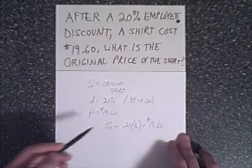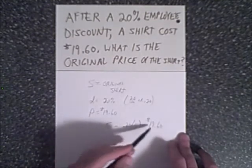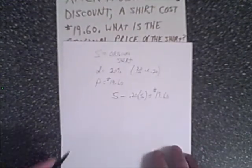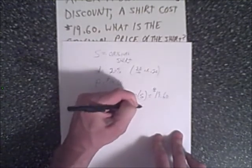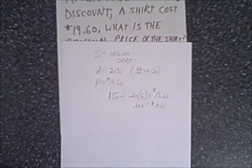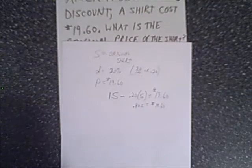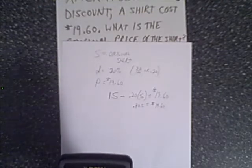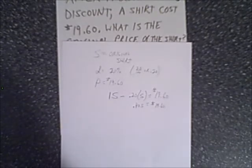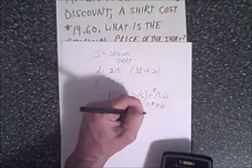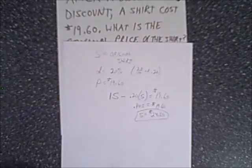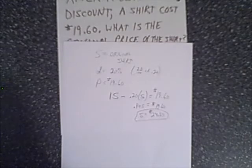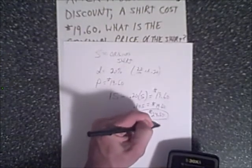So we have our equation. This is the same as 1S, so 1S minus 0.20S equals 0.80S, and that equals $19.60. Using a calculator, we take 19.60 divided by 0.8, and we get 24.50. So S equals $24.50, which is the original price of the shirt. We can quickly check: 24.50 times 0.20 is $4.90, and 24.50 minus $4.90 equals $19.60, which is our discounted price.